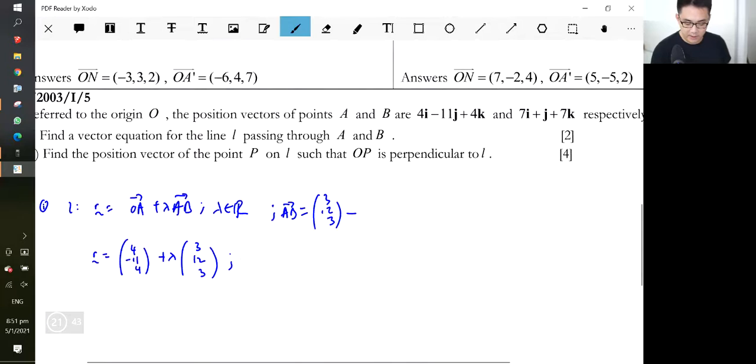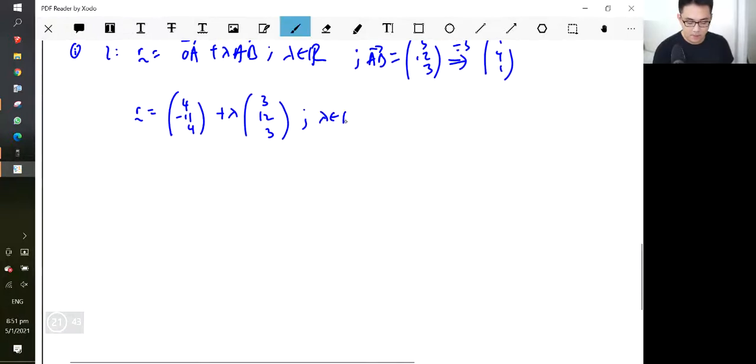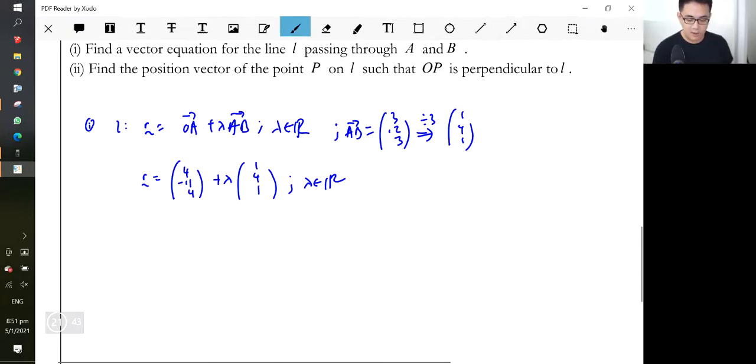But we like to simplify this. Just divide by 3: (1, 4, 1). Make it a habit. AB is (3, 12, 3), but you just put (1, 4, 1) - divide by 3. You could simplify this, make life easier.